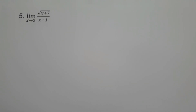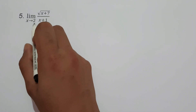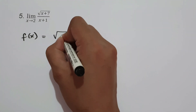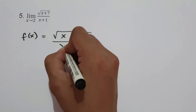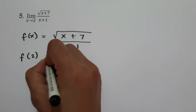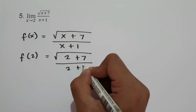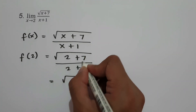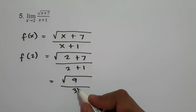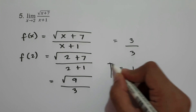On example number 5, we have the limit of square root of x plus 7 all over x plus 1 as x approaches 2. So f(2) = square root of 2 plus 7 over 2 plus 1 — that is square root of 9 over 3, which is 3 over 3 = 1. So 1 will be our answer.